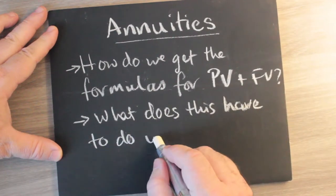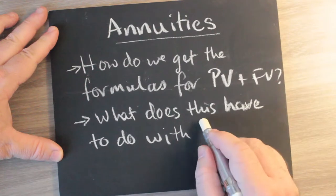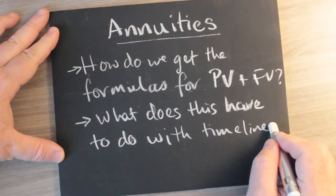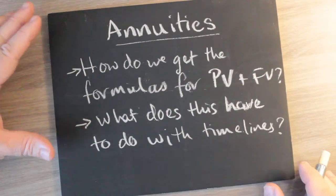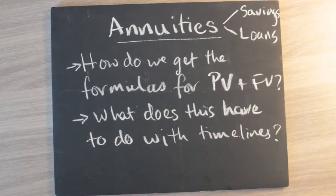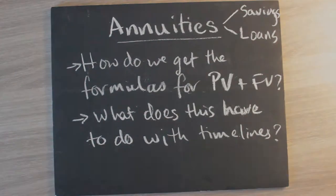First of all, how do we get the formula for future value and what does this have to do with the timeline? If we try out the timeline calculation, we will get the same value as we would get from the formula for future value. That's one way of showing that they both work. But where does this formula for future value come from? And by extension, you can also extend this discussion to present value as well.